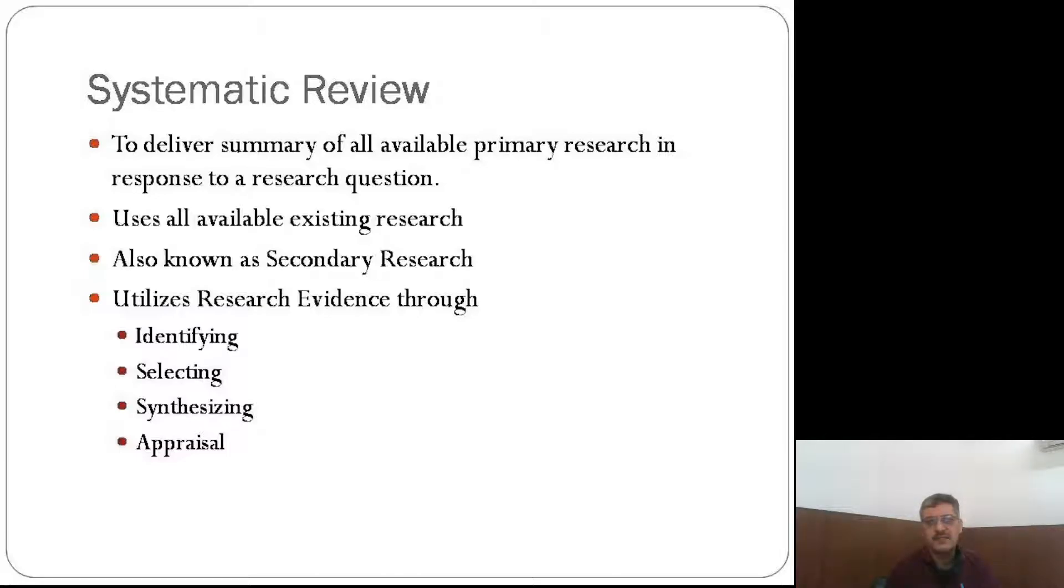It utilizes research evidence through identifying the problem, selecting, synthesizing, and appraising. These are the four different components which are very important for systematic review. We must identify exactly what type of existing research is going to be included and what is relevant to us. Then after identification, selection is there. It is not feasible to use all the existing research. That is why we want to select which are very close to our research. Then we should synthesize—analyze exactly what methodology they have used, whatever conclusion they have done, whatever the research question was. And after that, appraisal, and we have to go ahead with that if required.